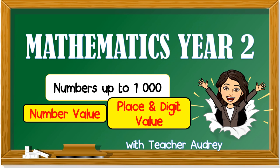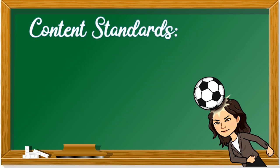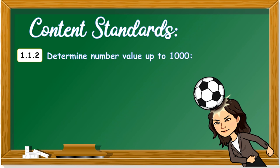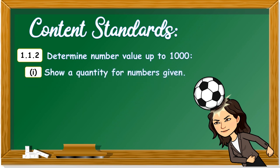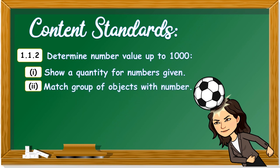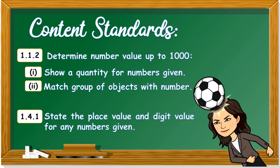Are you ready to learn? Let's take a look at the Content Standards for today's lesson 1.1.2: Determine Number Value up to 1000. By the end of the lesson, you will be able to show a quantity for numbers given. For example, if I say 2, you can bring 2 things or show things with 2 inside. You will also be able to match a group of objects with numbers. Another Content Standard is 1.4.1: State the Place Value and Digit Value for any numbers given. Place Value and Digit Value will be something new that you will learn today. Are you excited? Let's learn.